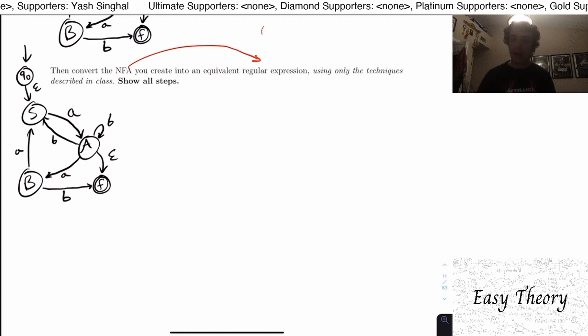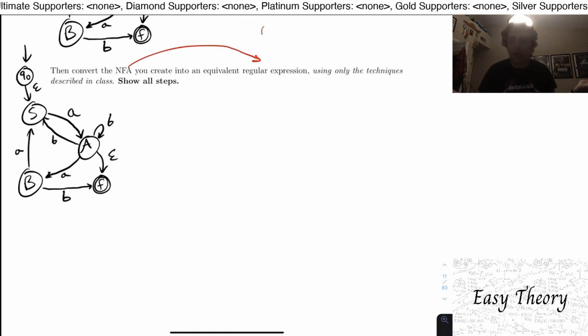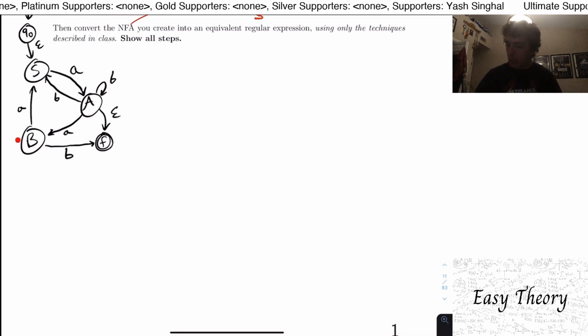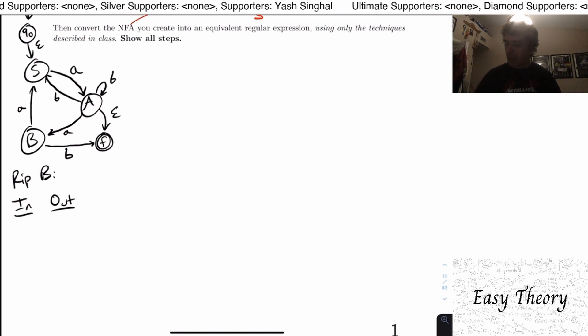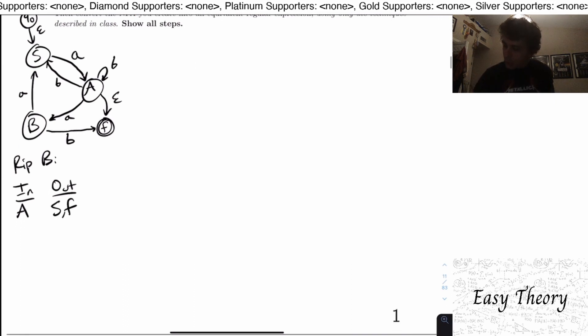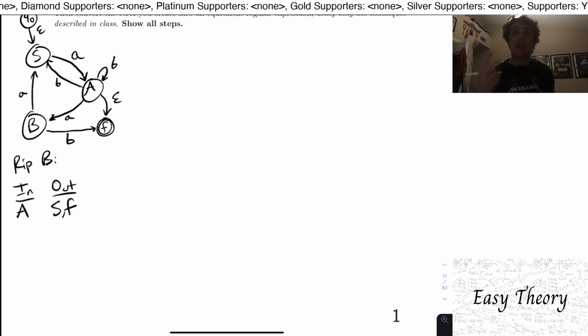Now we need to rip out the three states S, A, and B. The order doesn't matter, so I can rip out S first, then A, then B, or any other order. My general advice is to pick states that are easy to rip — meaning few transitions involving them. State B looks like a good choice. We make our in and out lists: A goes into B, and B goes to S and to F.